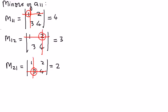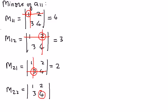Similarly, to find the minor of element A22, we write the elements down: 1, 2, 3, 4. Since we want the minor of element A22, we circle the second row, second column element, delete the second row and second column, and whatever is left is the minor. What is left is 1. So the minors are 4, 3, 2, and 1.